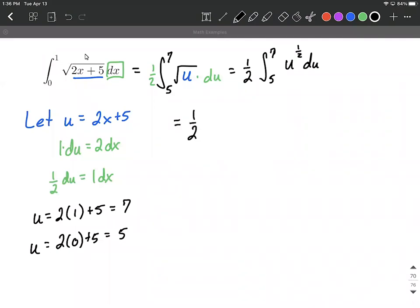So I'll bring the one half along. Then we have u and we're gonna increase the exponent by one. So one half plus one or one half plus two over two makes three halves for our new exponent.